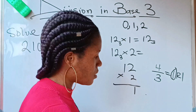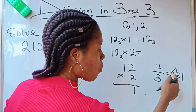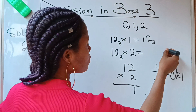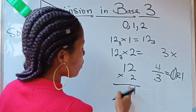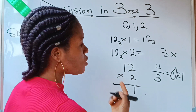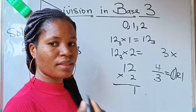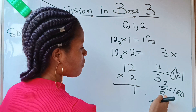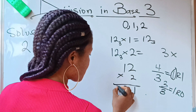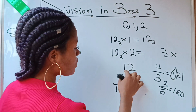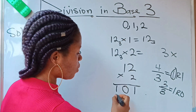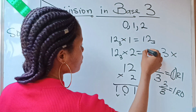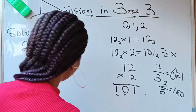Write the remainder down and carry the whole number. Now 2 times 1 is 2, plus that 1 you are carrying, gives you 3. We are not supposed to have 3, so we divide 3 by 3 again and get 1 remainder 0. So we write 0 and carry 1. That gives us 101 in base 3. So 12 in base 3 times 2 equals 101 in base 3.